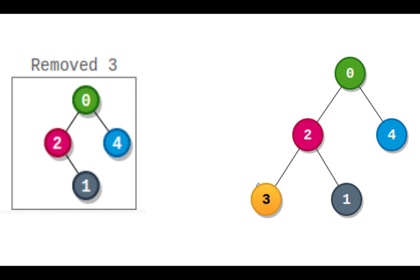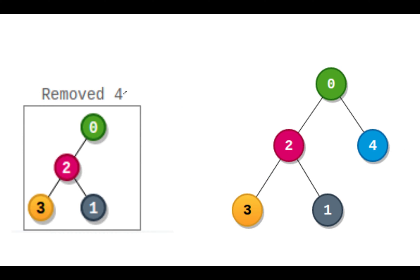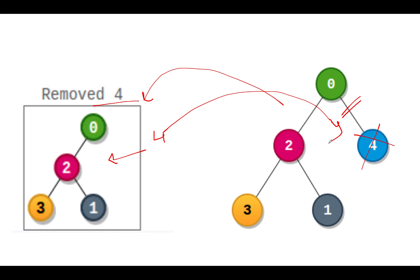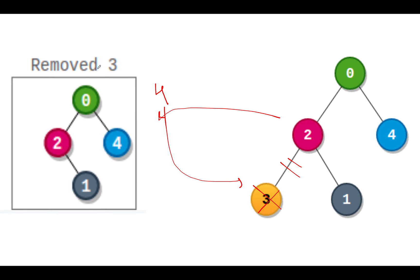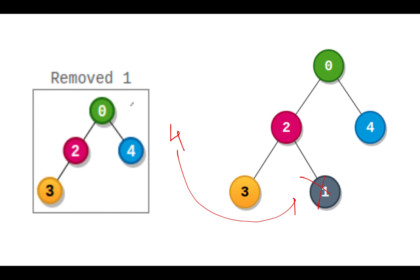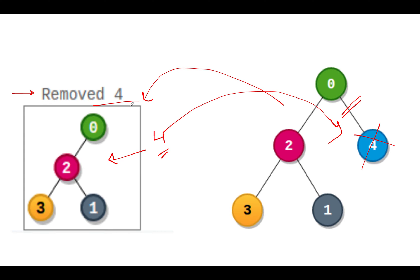If we remove node three, four nodes are left, so the score of three is four. If we remove node four, four nodes are left as well, so the score of four is also four. We can see the maximum score possible is four. How many nodes have a score of four? Node four, node three, and node one — three nodes in total have the maximum score of four, so the answer is three.